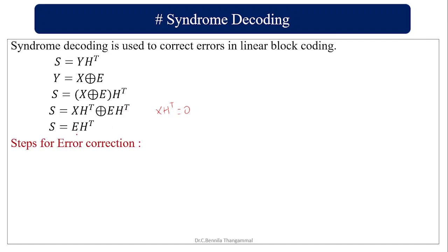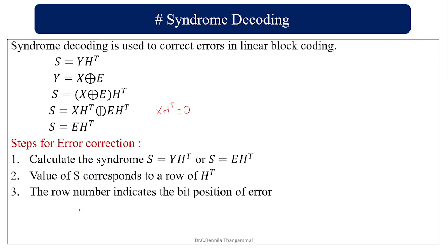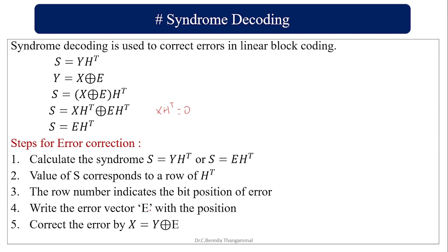Here E is the error pattern and H is the parity check matrix. Steps for error correction: 1. Calculate syndrome S either by Y · H transpose or E · H transpose. A value of S corresponds to a row of H transpose. After equating it, the row number indicates the bit position of the error. Write the error vector E using the decoding table.